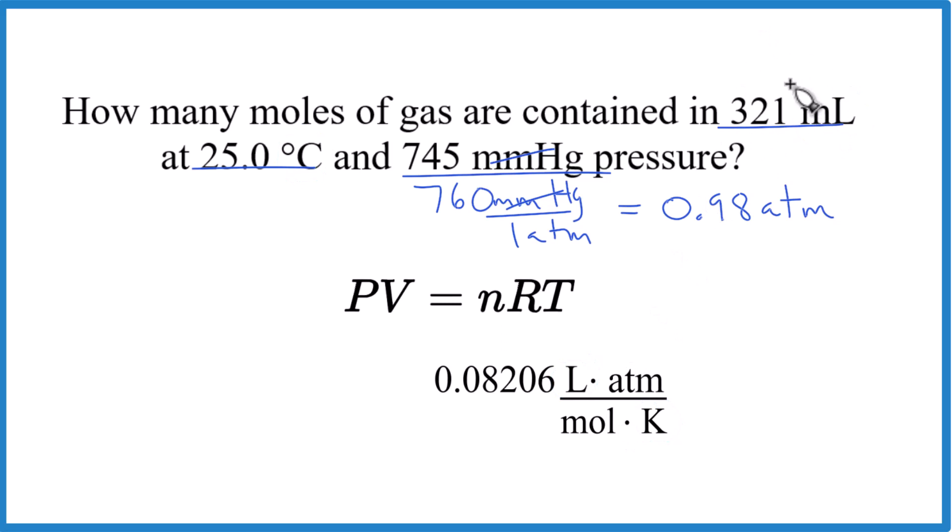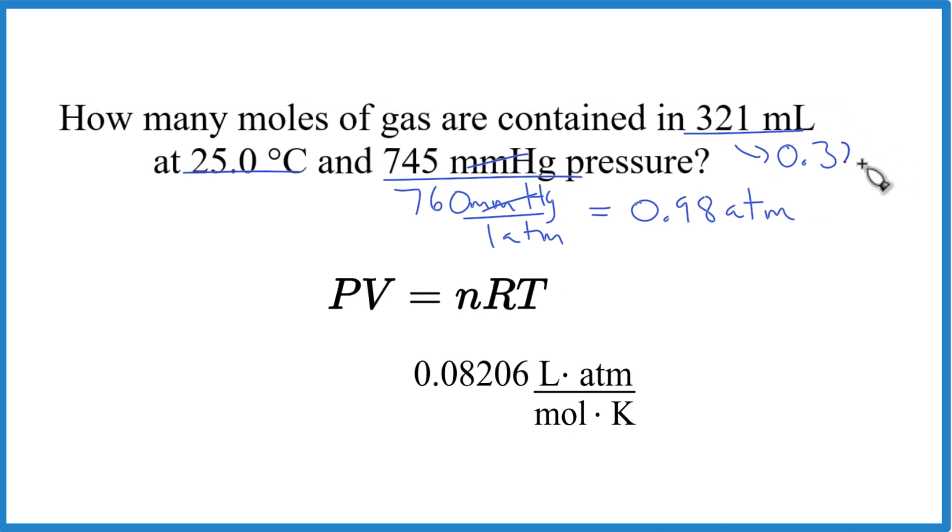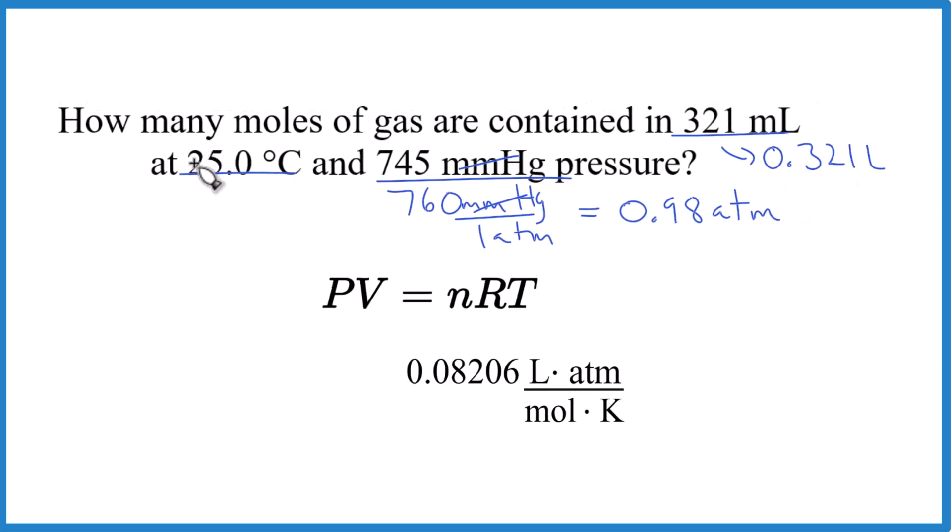So to get from milliliters to liters, we divide by 1,000. We're going to end up with 0.321 liters. And then we add Celsius plus 273.15. That'll give us Kelvin. So we get 298.15 Kelvin.